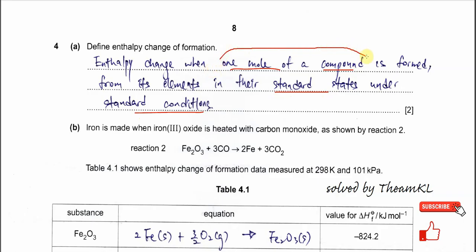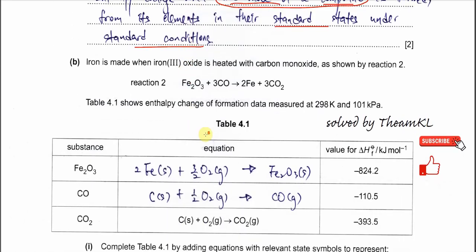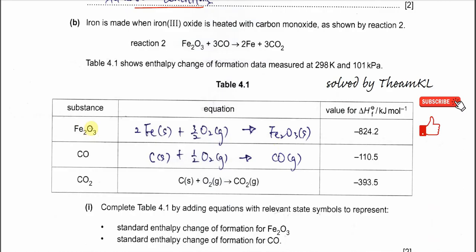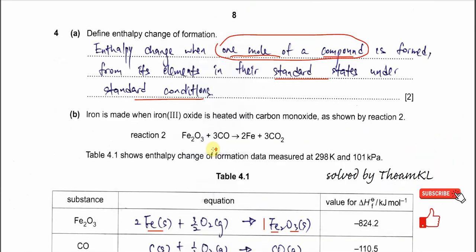First, you need to make sure one mole of the compound is formed — this is worth one mark. It must be formed from its elements. For example, if we want to form iron oxide, one mole must be produced from its elements: iron and oxygen. Iron is solid under standard conditions, and oxygen is a gas. The elements must be in their standard states — that is the meaning of enthalpy change of formation.